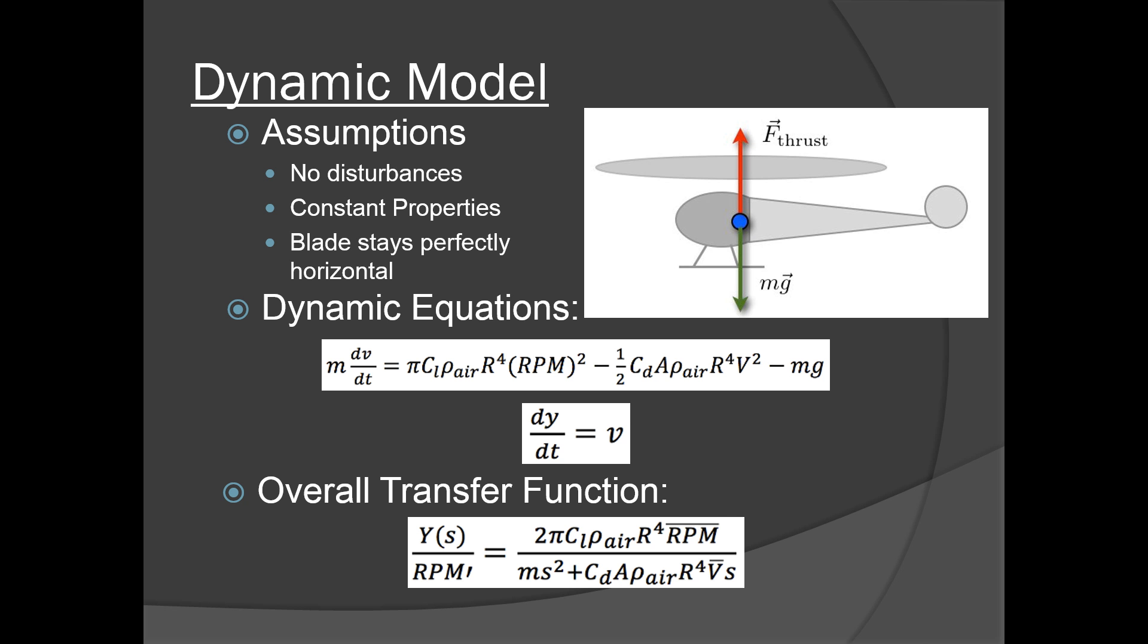So the first step in accomplishing this task was to create a dynamic model. Since helicopter flight is pretty complex, we wanted to keep our model simple for the purposes of this project. And so we decided that we wouldn't take into account any disturbances like wind or weather, and that, for example, the density of air wouldn't change with temperature or elevation. And also we were only going to model in the vertical direction.